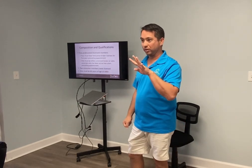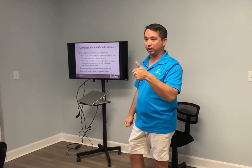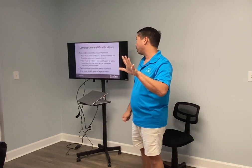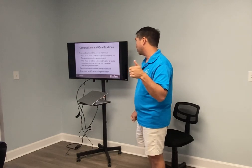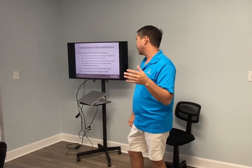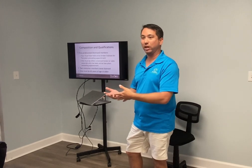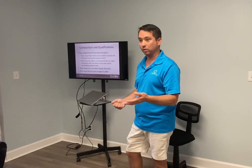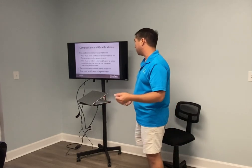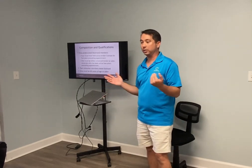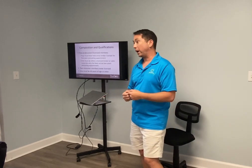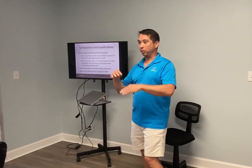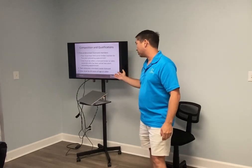The fifth licensee can be a broker associate or sales associate, active for the last two years. So the commission is four brokers and one broker associate or sales associate — five professionals total. For the two consumer members, one person must be over 60, because you want all generations covered. Two elderly people is fine, but you can't have two younger people.